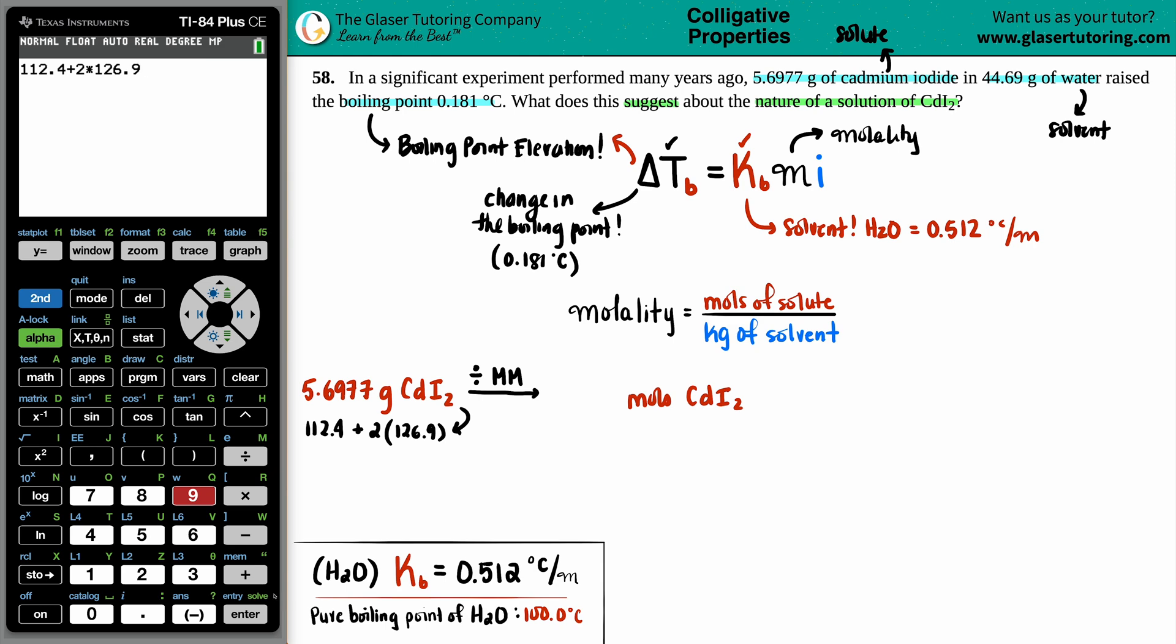So let's see what that number is. So I get 112.4 plus 2 times 126.9. Now that looks good to me. Let's press enter. So let's divide by 366.2. So 5.6977 divided by that answer. And we get 0.0155556. Perfect.